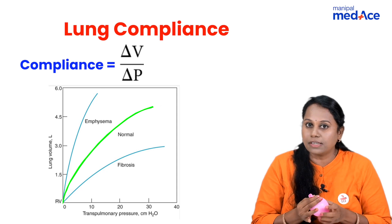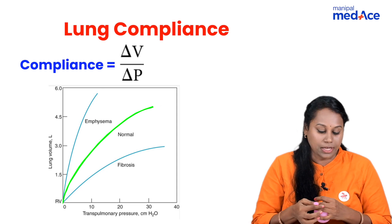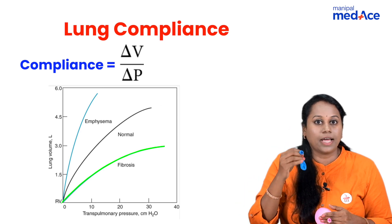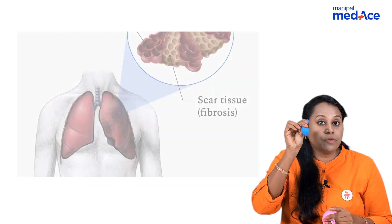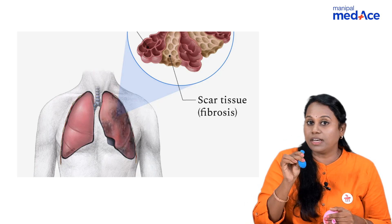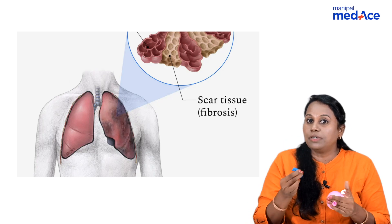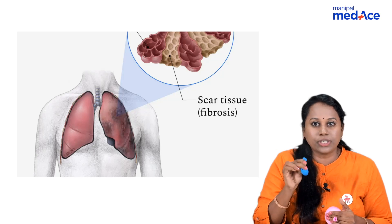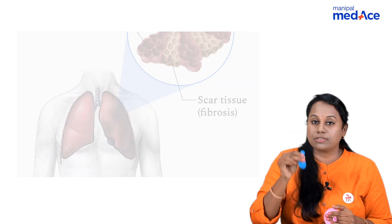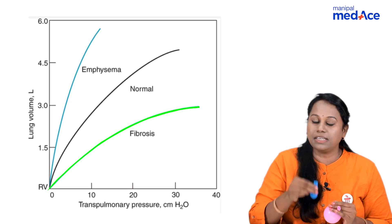What happens to compliance in respiratory diseases? In a fibrosed lung, I will apply the same pressure — look at the change in volume, only this much. Fibrosis is a condition where you have thickening of the lung tissue, that is scarring of the tissue, so it is not able to expand. For the same change in pressure that I applied, only this much is the volume change. So, compliance has decreased in fibrosis.